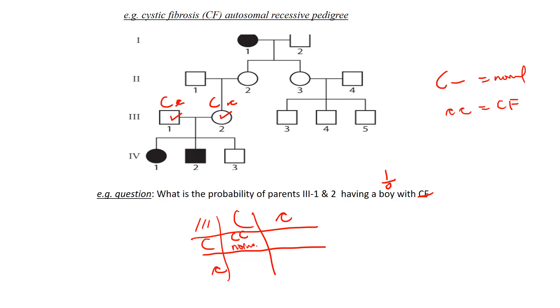So this is normal. Capital C, little c, normal. That would be a carrier but still normal. And the only one we have here, we see CF is one out of the four boxes. Combine that with our product rule, one out of two, and we get one times one is one, four times two is eight. One-eighth.